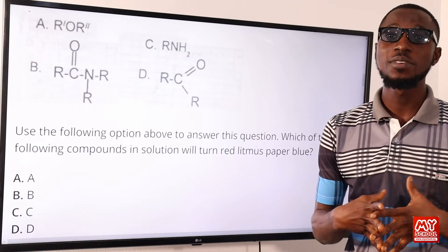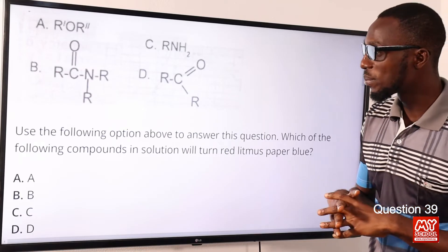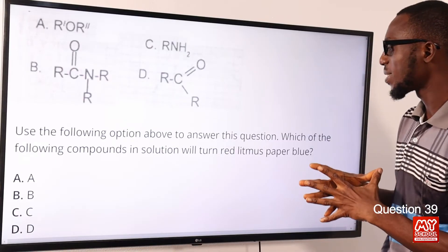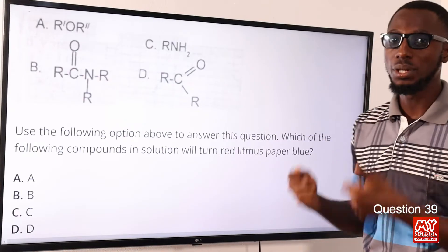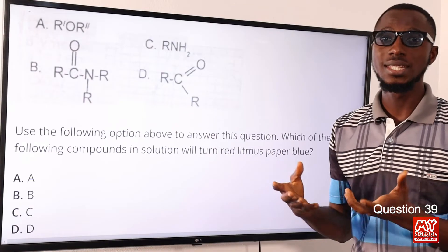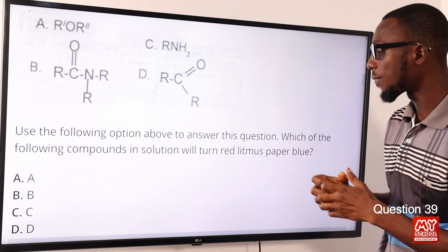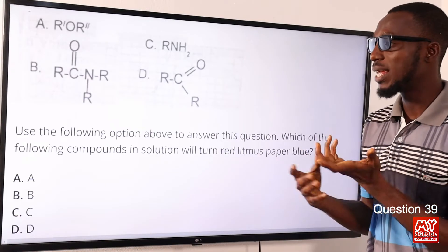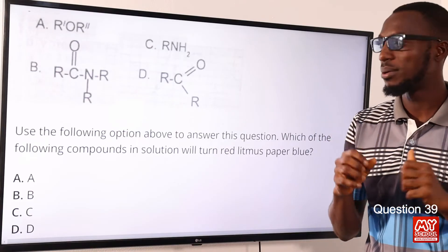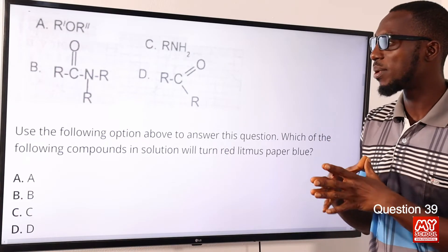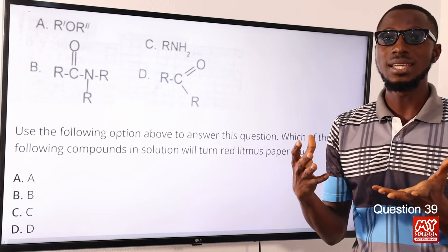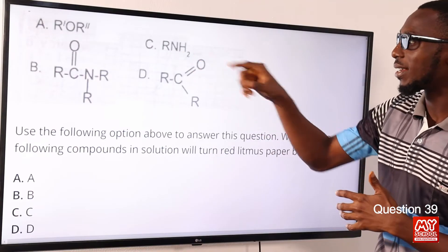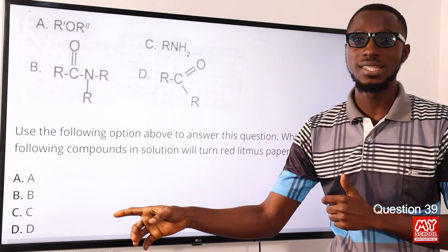Question 39: Which of the following compounds in solution turns red litmus paper blue? This is a property characteristic of bases. Amines are bases — they are liquids and gases with a fishy smell and are polar compounds. The general formula for primary amines is RNH2. The correct option is option C.